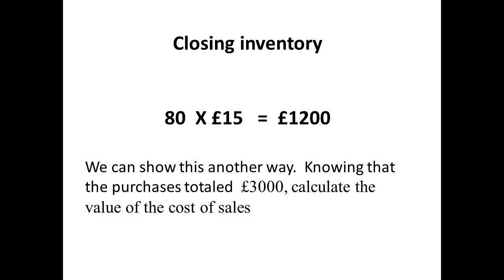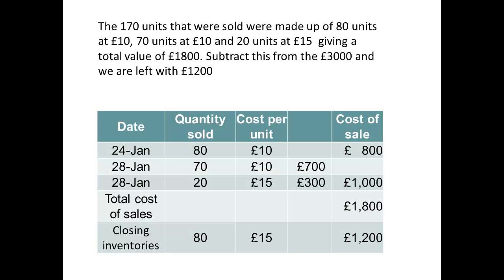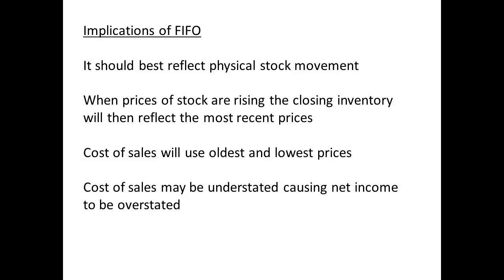We can also show this another way. The total cost of the units sold was 80 units at £10, 70 units at £10, and 20 units at £15, giving a total of £1,800. Subtract this from £3,000 and we are left with £1,200. FIFO best reflects the movement of physical inventory, and when prices are rising the closing inventory will reflect the most recent prices, while the cost of sales will use the oldest and lowest prices.